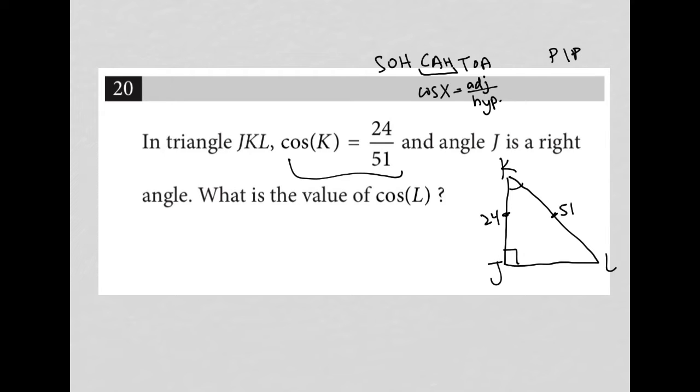What is the value of the cosine of L? So angle L, the cosine would be adjacent over hypotenuse, which means it would be X over 51. So the answer should be X over 51. But how do I figure out what X is?